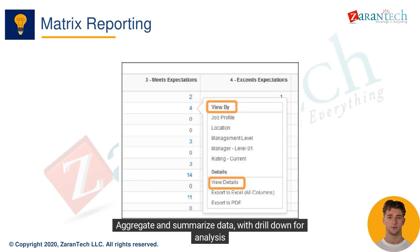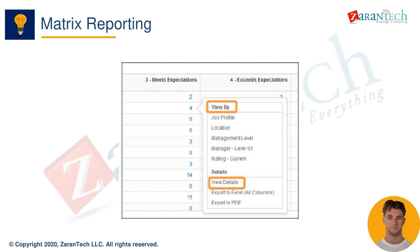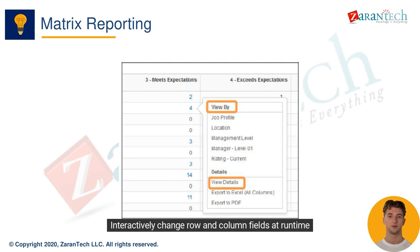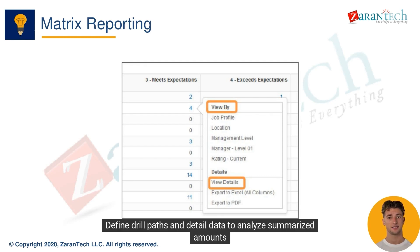Here is a summary of the key capabilities of matrix reporting in Workday: aggregate and summarize data with drill down for analysis, include optional column grouping, interactively change row and column fields at runtime, and define drill paths and detailed data to analyze summarized amounts.